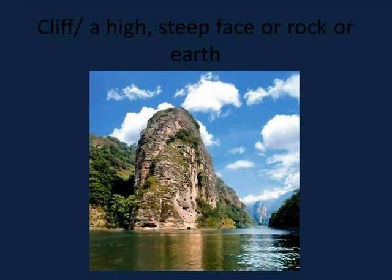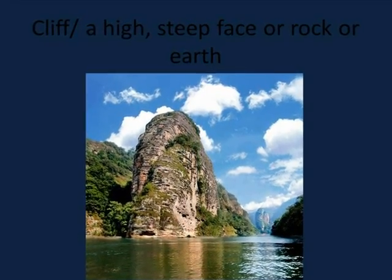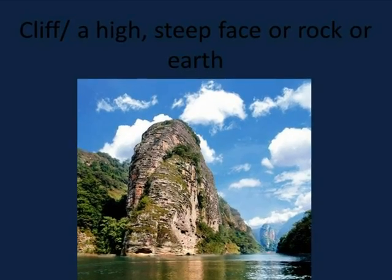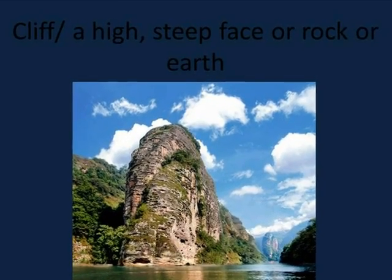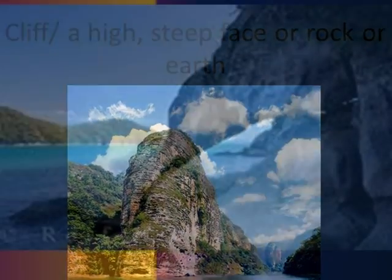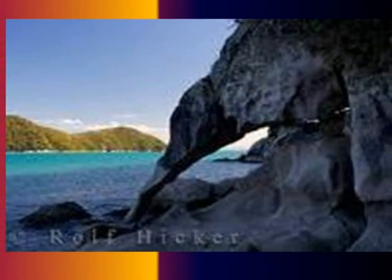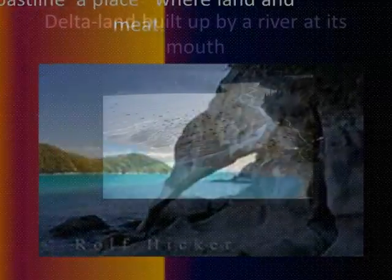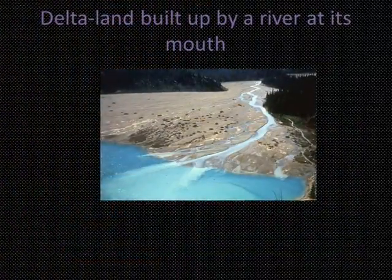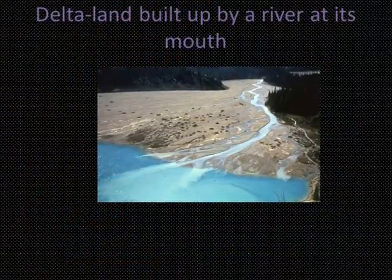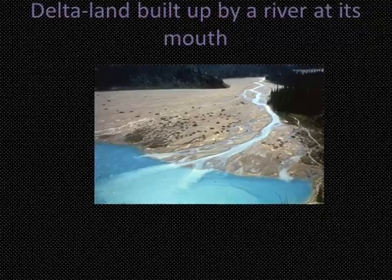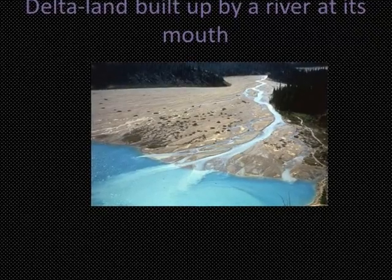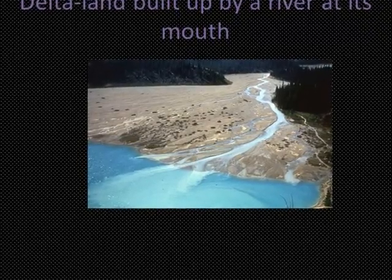A cliff is a high steep face of rock or earth. A coastline is a place where land and water meet. A delta is land built up by a river at its mouth.